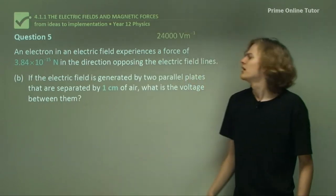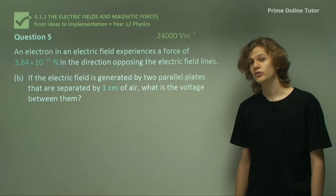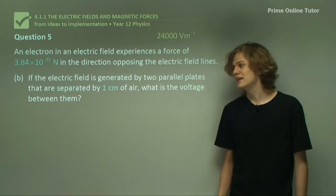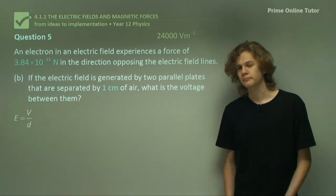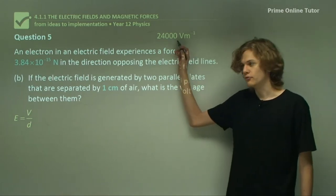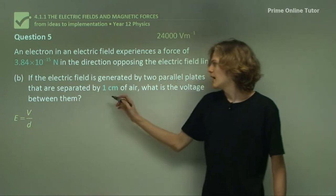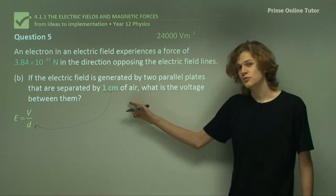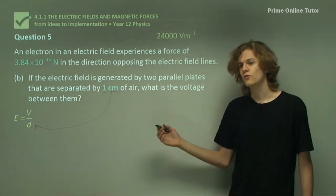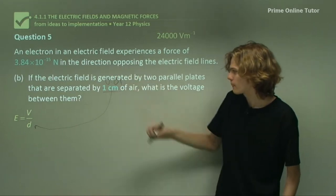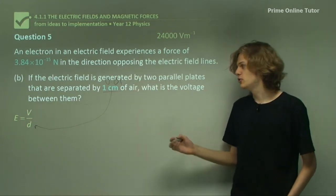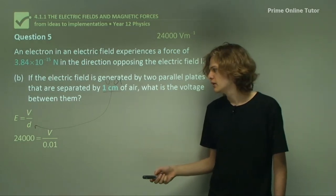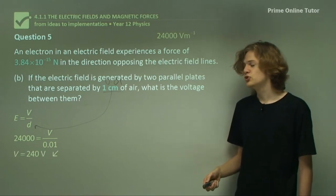Part b. If the electric field is generated by two parallel plates that are one centimeter apart, what is the voltage between the plates? The relevant equation here is E equals V on D. We know the strength of the electric field, so we can substitute that for E. We know the distance between the plates, which we substitute for D — but remember, this is in centimeters, so we must convert it to meters before using it in the equation. After substituting these into the equation and multiplying both sides by 0.01, we can find that the voltage must be 240 volts.